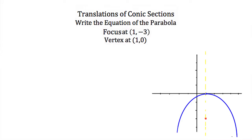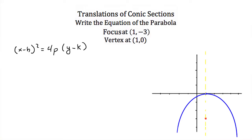Since our parabola opens downward or in the negative y direction, we're going to use the standard form (x - h)² = 4p(y - k). We know our vertex is at (1, 0), so that means h is equal to 1 and k is equal to 0.